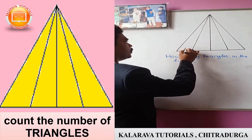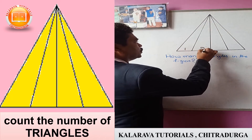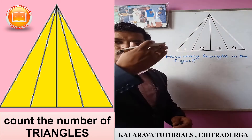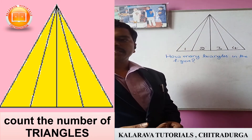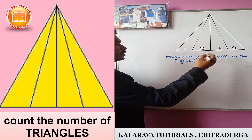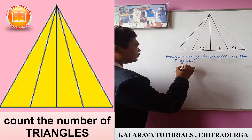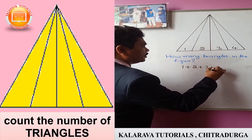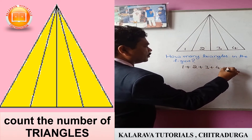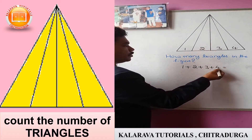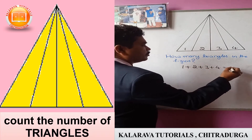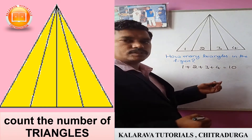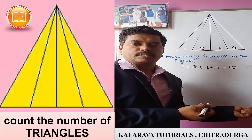We write 1, 2, 3, 4 — there are 4 triangles. For finding the total number of triangles, we have to add these: 1 plus 2 plus 3 plus 4. So 4 plus 3 is 7, 7 plus 2 is 9, 9 plus 1 is 10 triangles. There are 10 triangles in this figure.